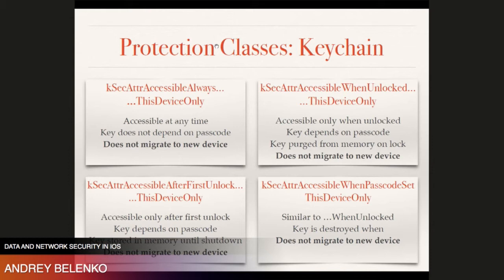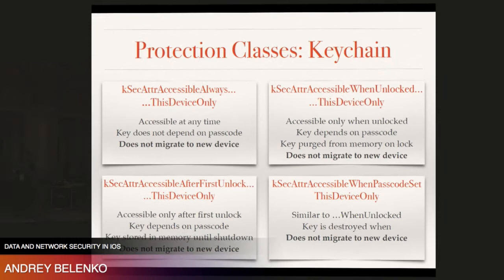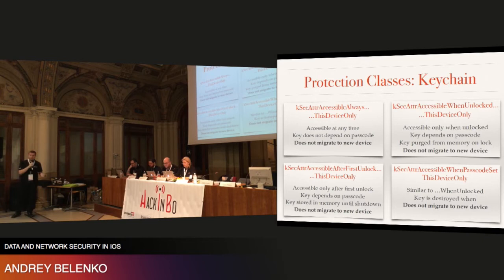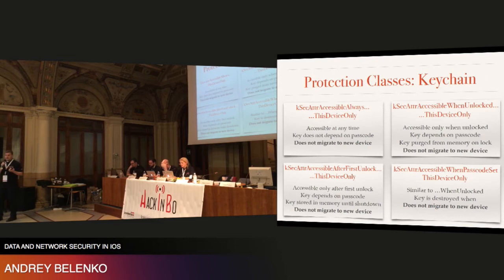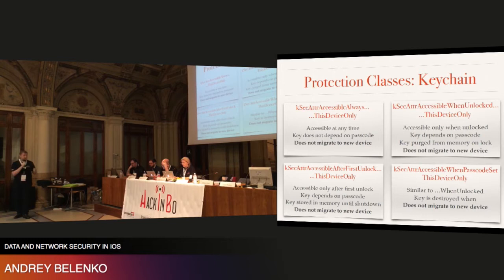For the keychain we have additional protection classes with a 'this device only' suffix. This is important: if you use, for example, security attribute accessible always this device only, you can ensure that this particular keychain item will not migrate to a different device. There is a documented procedure where you create an encrypted backup and restore it to a different device — but for some applications, like one-time password apps such as Google Authenticator, you don't want users to be able to clone those. Using these protection classes, the new device will not be able to decrypt those items.